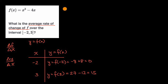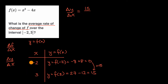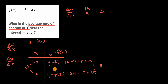So what is our change in y over our change in x over this interval? Our y went from zero to 15, so we have an increase of 15 in y. And our change in x: we went from negative two to positive three, so we had a plus five change in x. So our average rate of change of y with respect to x over the interval is going to be equal to three.